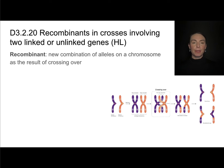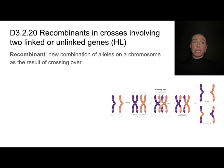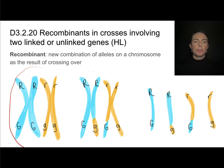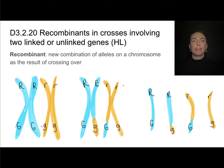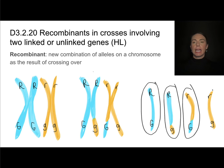A recombinant is a new combination of alleles on a chromosome that is the result of crossing over. This diagram shows crossing over in prophase one of meiosis. Before crossing over, one parent has the dominant allele for both traits and the other has the recessive allele. After crossing over, there's been an exchange of alleles. Once homologous pairs separate in meiosis one and sister chromatids separate in meiosis two, you get different combinations in each gamete: dominant-dominant, dominant-recessive, recessive-dominant, and recessive-recessive. The middle two are the recombinants.